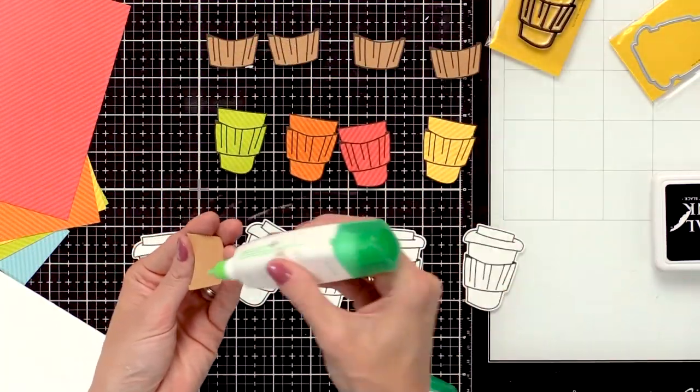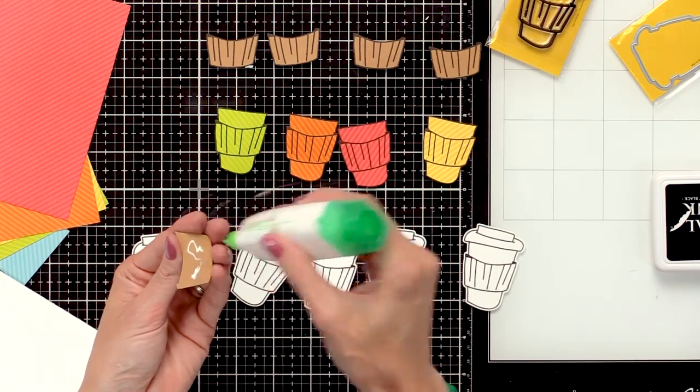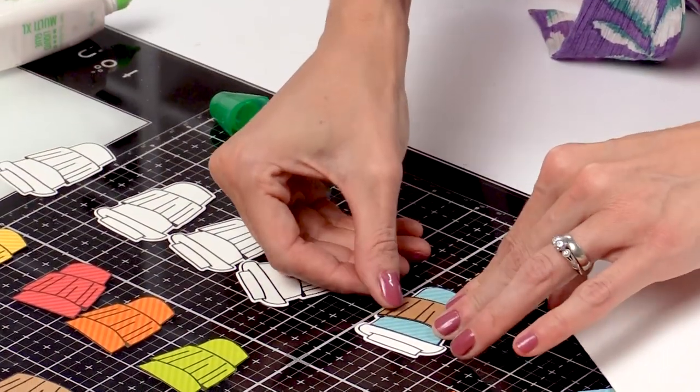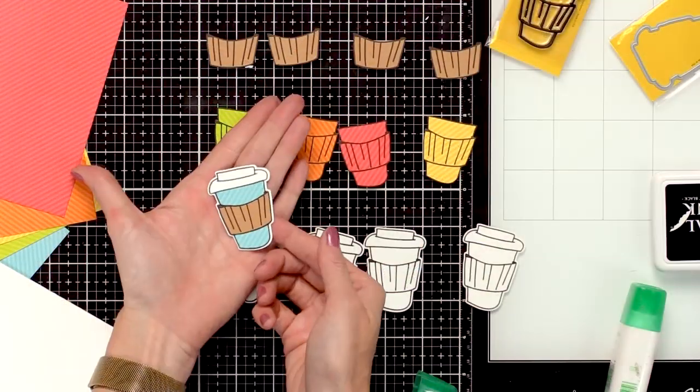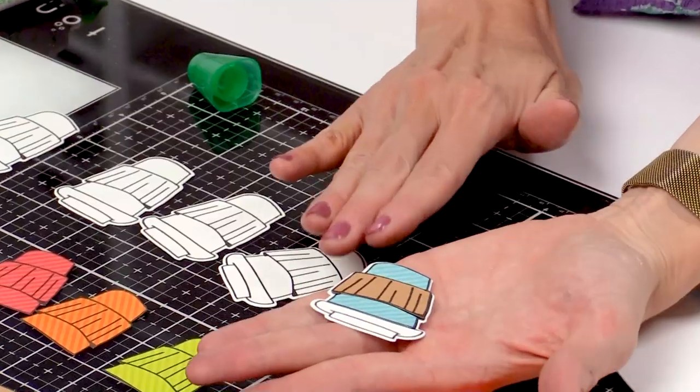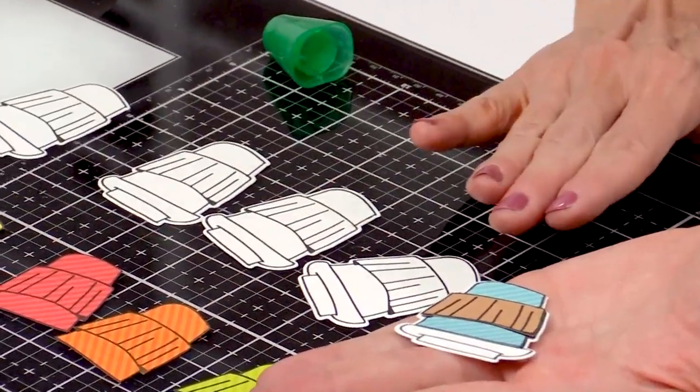Then we'll add our little craft cozy. And there's our completed cup. Now I'll repeat this process for the other 4 coffee cups.